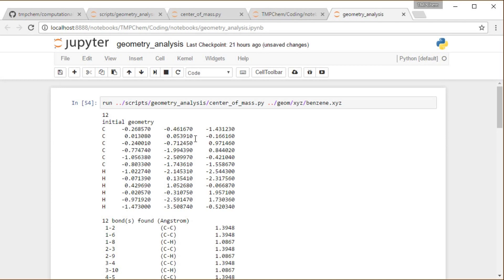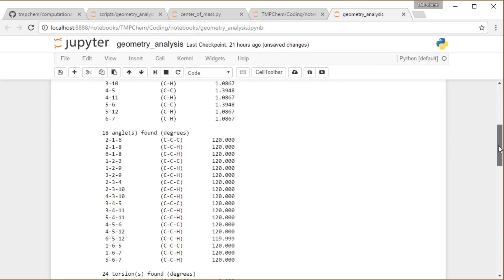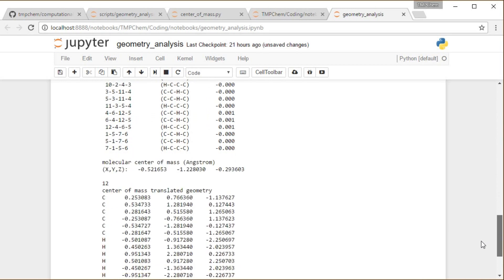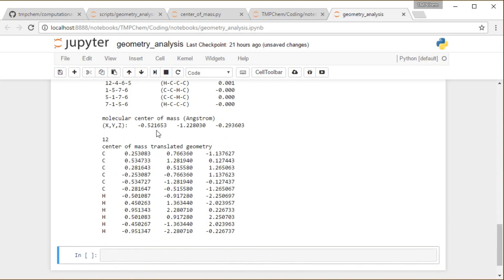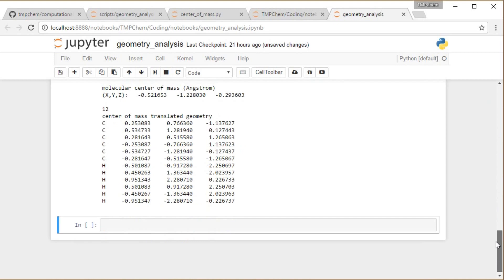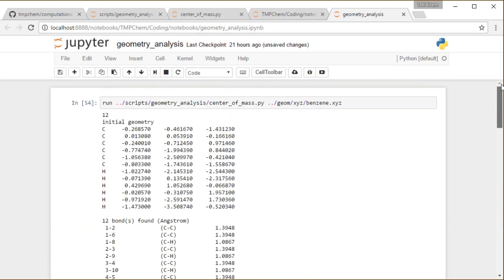So we got the initial XYZ geometry repeated to us. It found 12 bonds and bond lengths, 18 bond angles, 24 torsion angles, 18 out of plane angles. The center of mass was originally at these coordinates. And then it translated the molecule, its XYZ coordinates to that center of mass. You can notice that these differ from the original coordinates by the values of the center of mass. So you can feel free to follow along or run that on any of the other files in that XYZ directory or any new ones that you make yourself.